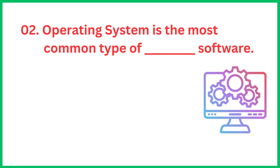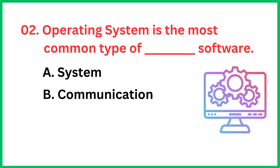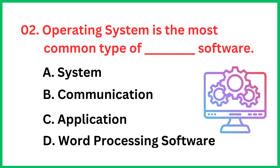Operating system is the most common type of system software. The correct answer is option A, system.